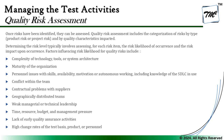Once risks have been identified, they can be assessed. Quality assessment includes the categorization of risk by type — either product risk or project risk — and by quality risk impacted, that is the quality characteristics. Determining the risk level typically involves assessing, for each risk item, the likelihood of occurrence and the risk impact upon occurrence. When it comes to factors influencing risk likelihood for quality risk — quality risk is the synonym for product risk, whereas project risk can also be called planning risk.